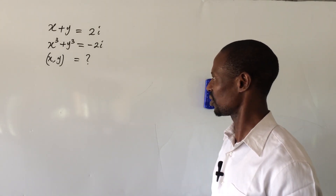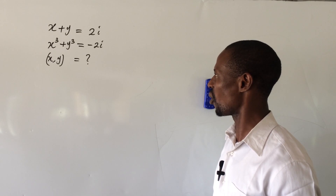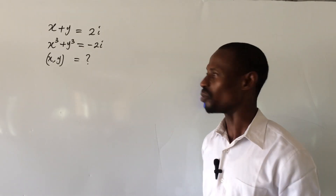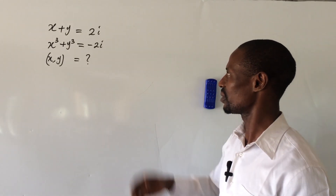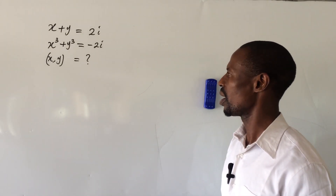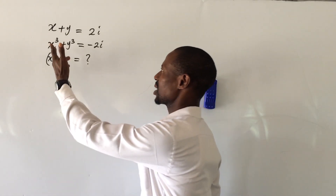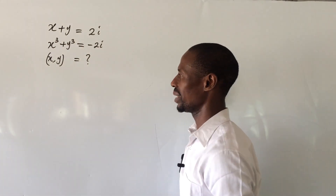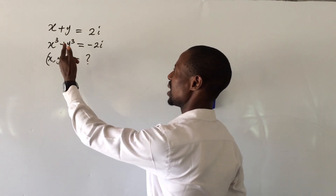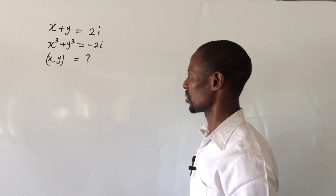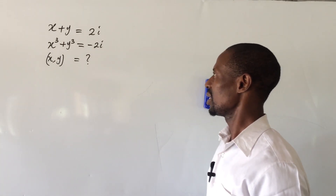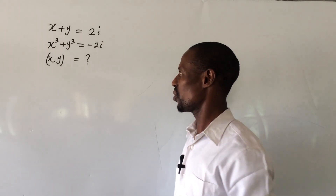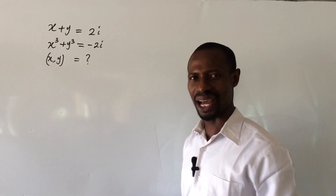In today's class we have a challenge on simultaneous equations — one linear and one trinomial, also having imaginary numbers. Equation 1 is x plus y equal to 2i, and equation 2 is x to the power of 3 plus y to the power of 3 equal to minus 2i. What will be the value of x and y?